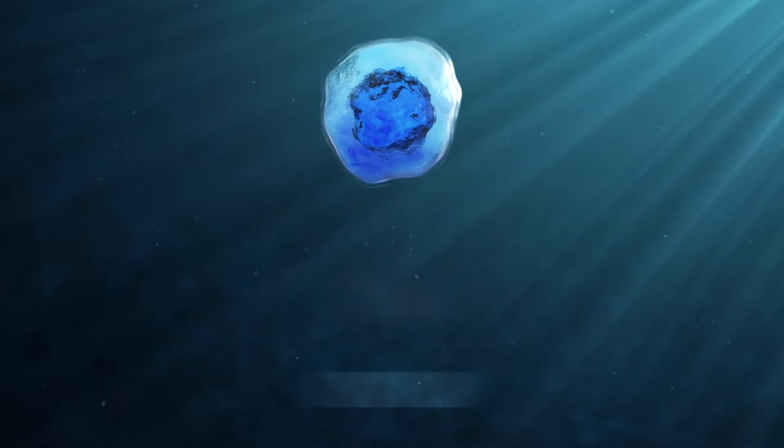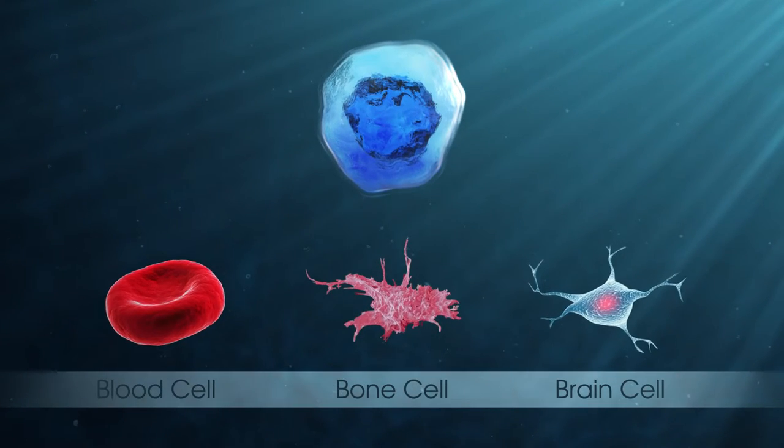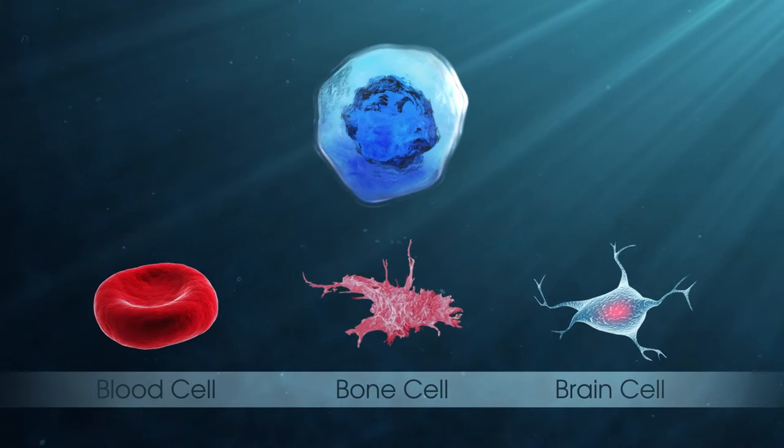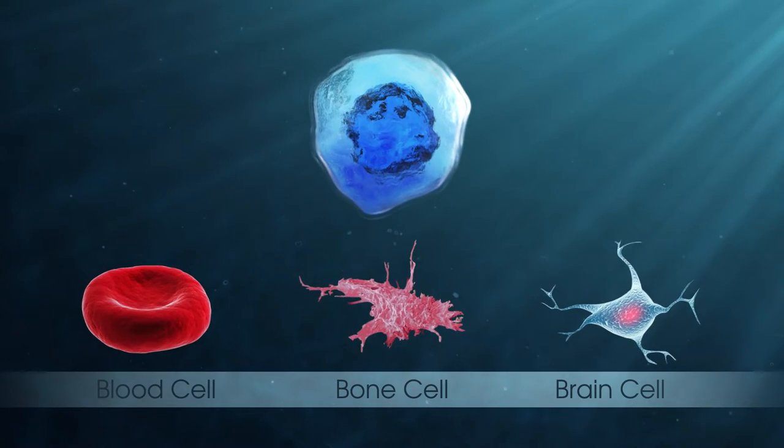Stem cells are the body's master cells. Stem cells are undifferentiated, meaning they can become a variety of different cells.